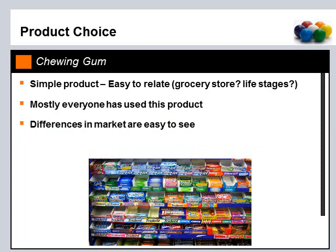The differences in this particular market are very easy to see. You can look at the labeling, fonts, imagery, and what's on the package to see how they're marketing to each individual market segment or slice. And last, and I think most importantly, it's a pretty fun topic. I'm a true believer that people learn when they're having fun, so let's have some fun and talk about market segmentation relating to chewing gum.